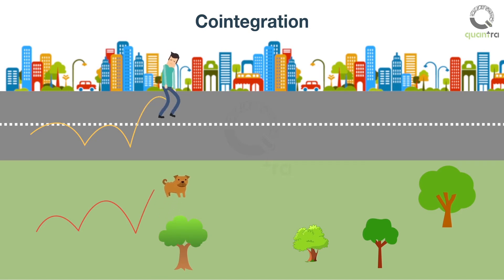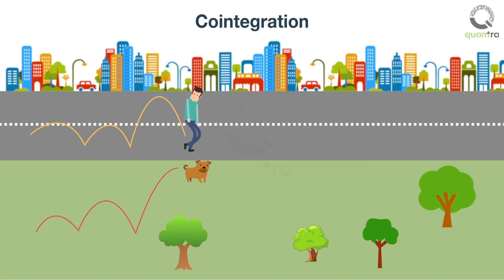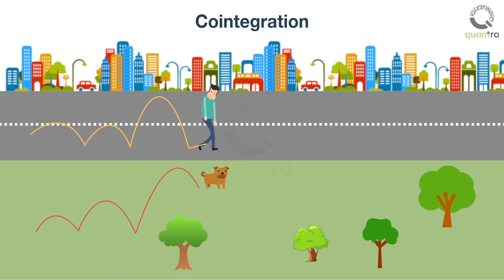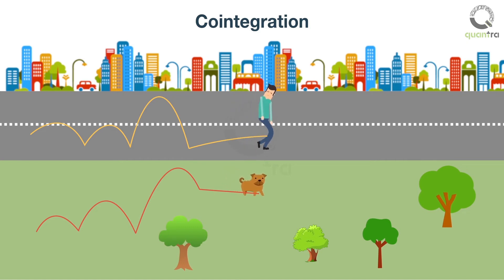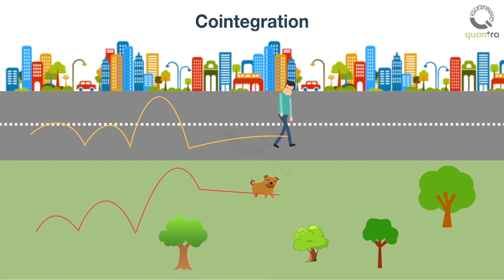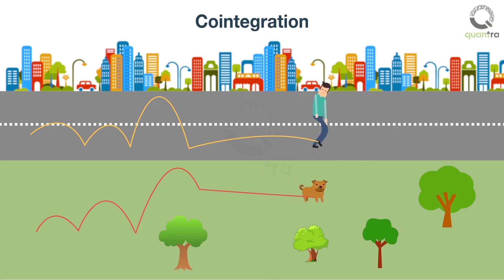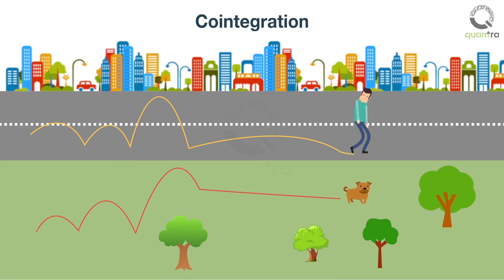However, assume that the dog and the drunk man stay connected to each other using their hearing and smelling senses. Then the distance between them is bounded and doesn't increase indefinitely. Loosely speaking, we can say that the distance between the two paths is stationary, and hence the paths of the drunk and his dog can be considered as co-integrated.